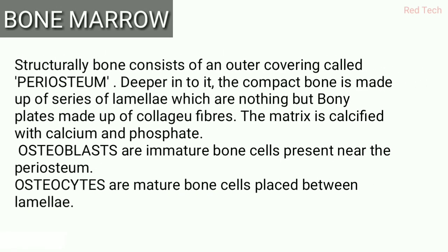Structurally, bone consists of an outer covering called periosteum. Going deeper, it is basically compact bone made up of a series of lamellae, which are bony plates made up of collagen fibers. The bone matrix is calcified with calcium and phosphate — that's why we say bone contains calcium.